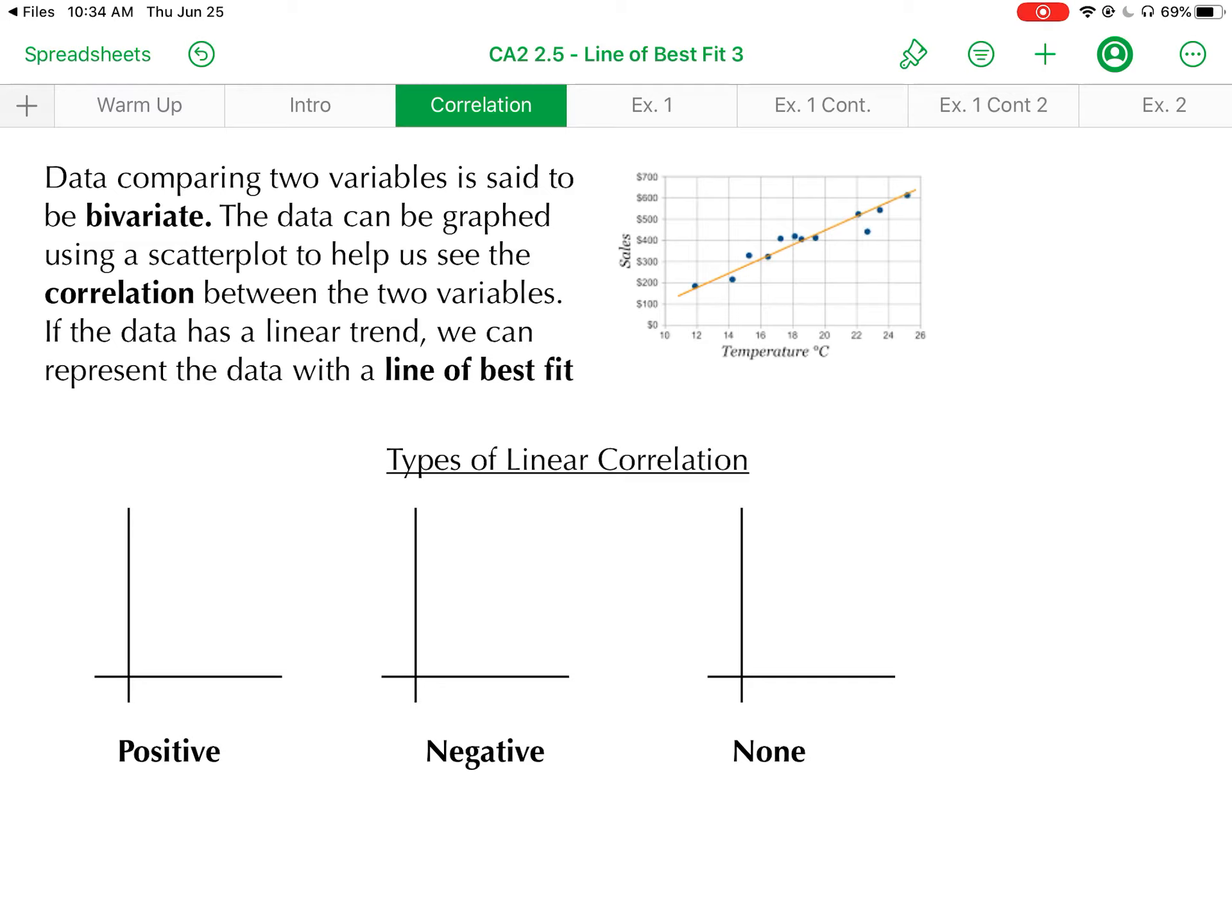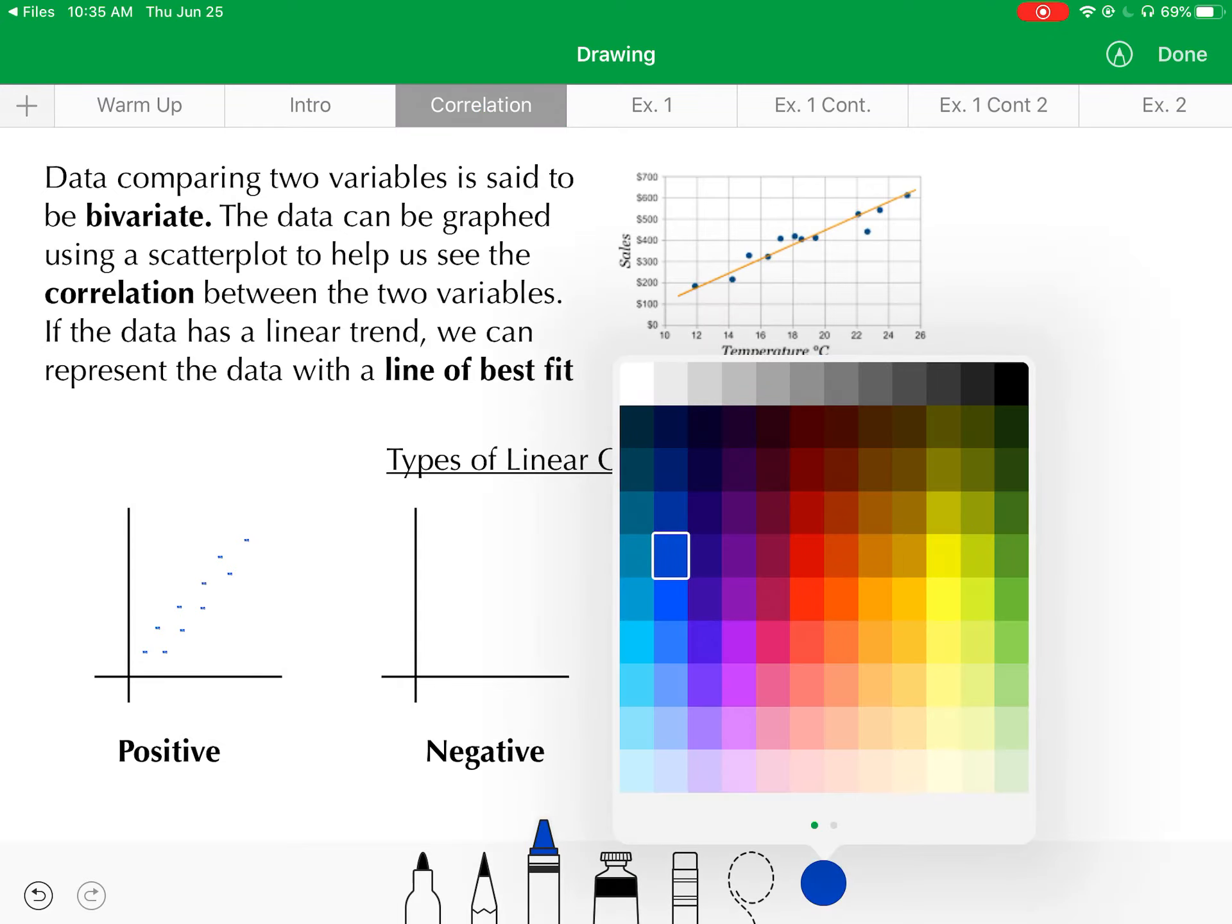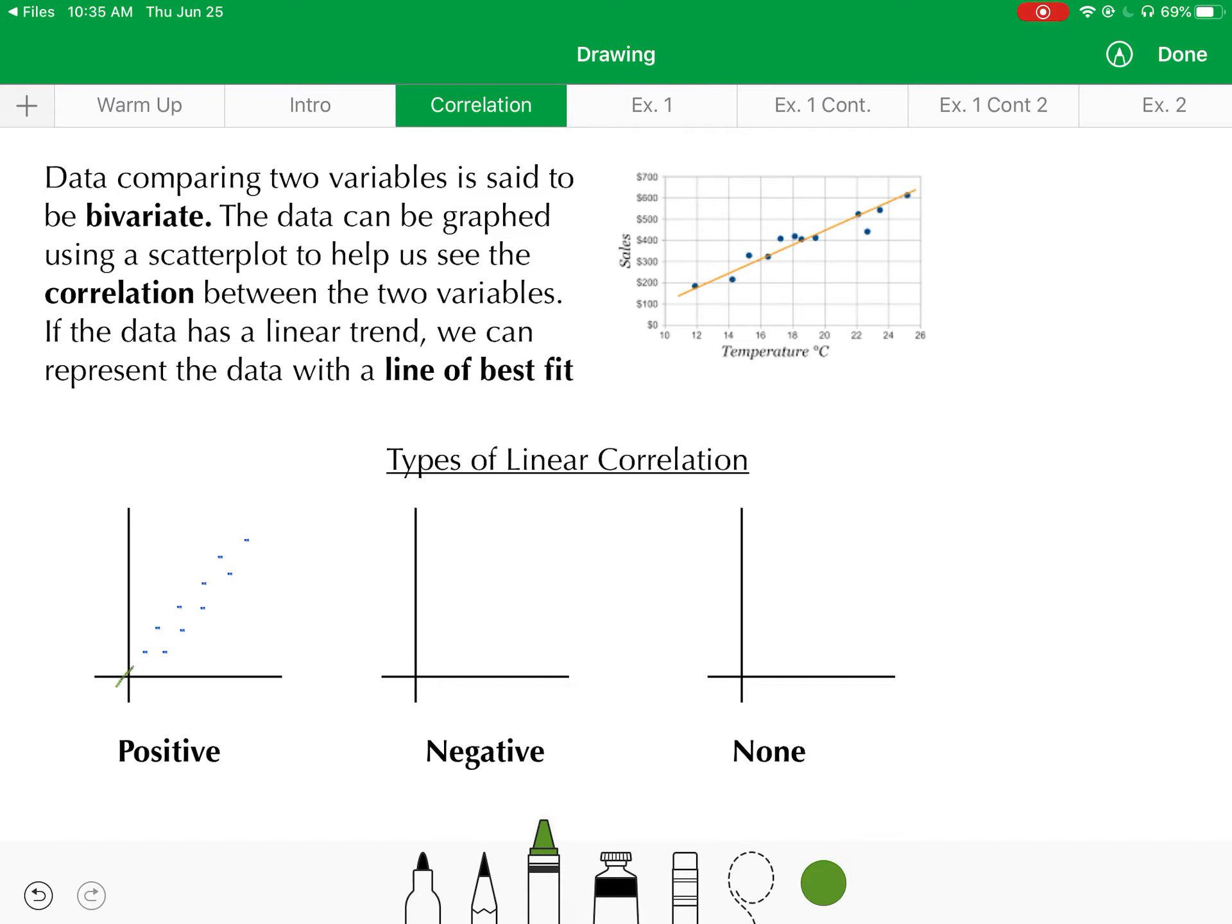In terms of linear correlation, there are three possibilities for your bivariate data. The first possibility would be a positive correlation between the two variables of your data set. A scatter plot for that would have an upward linear trend to your data points, something like this. You can see we could represent that with a line that has a positive slope to it. The idea of a positive correlation is that as the value of one of the variables in the data set is increasing, so is the value of the other variable.